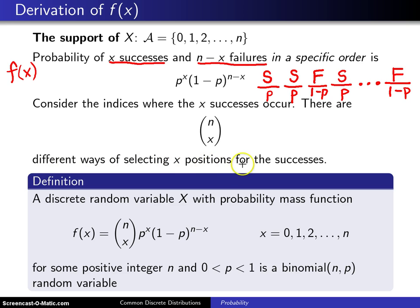This leads to the following definition. We now have a probability mass function which we have derived here, and it is as follows. A discrete random variable X with probability mass function f(x) equals n choose x times p to the x times 1 minus p to the n minus x.